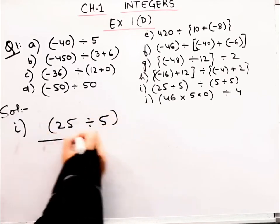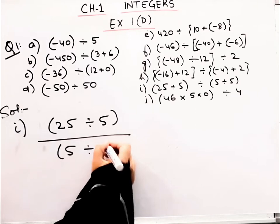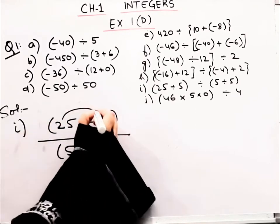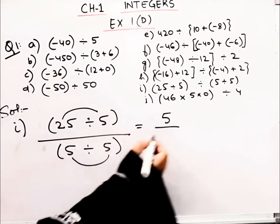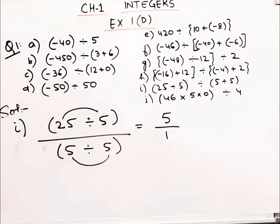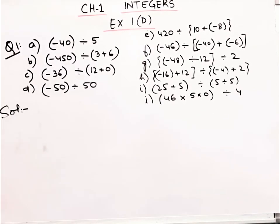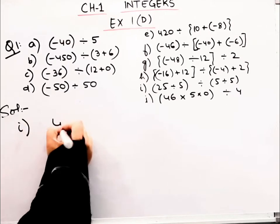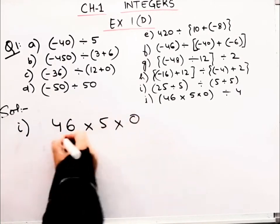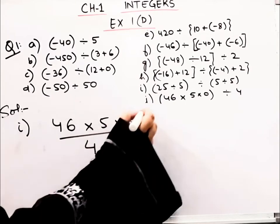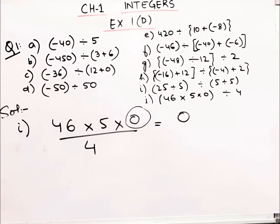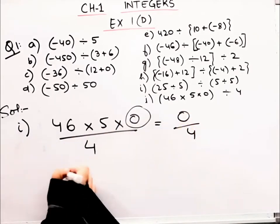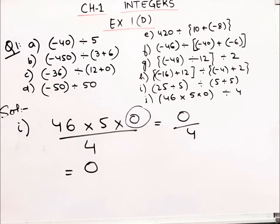Now let's do the part (i). In part (i), what do we have? 46 into 5 into 0 divided by 4. Look, if we multiply any number by 0, what answer do we get? 0. And if we divide 0 by any number, what will the answer be? 0. Clear.